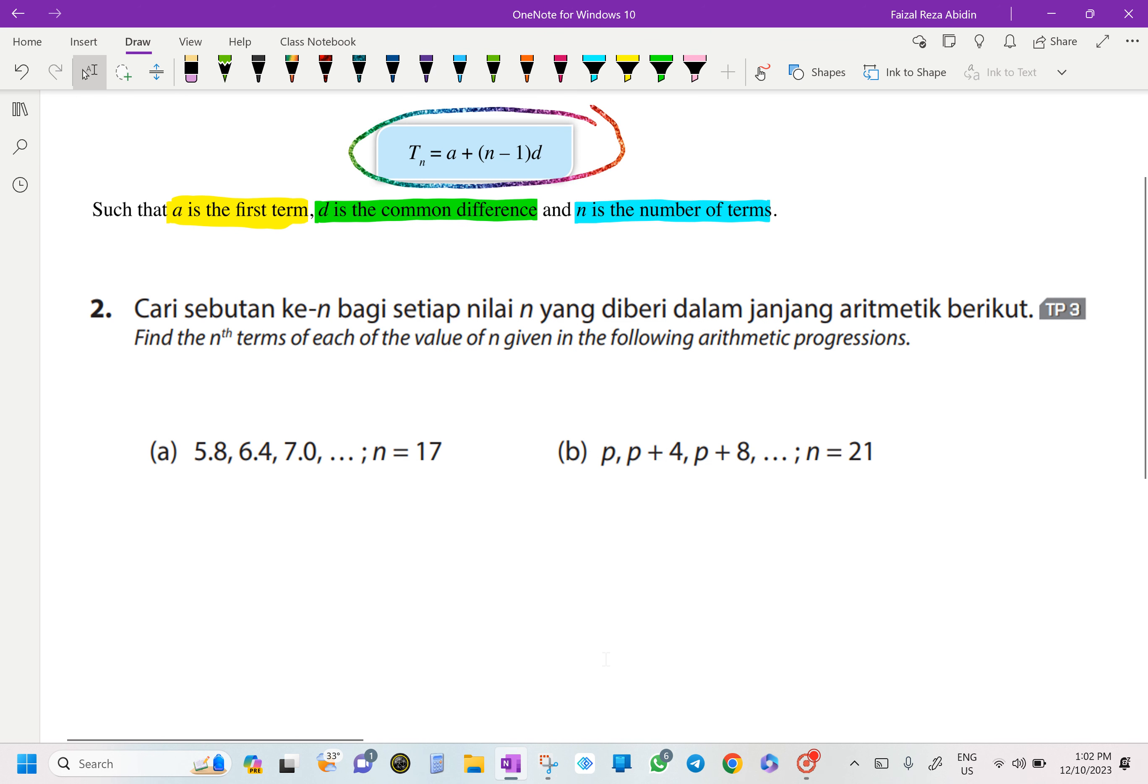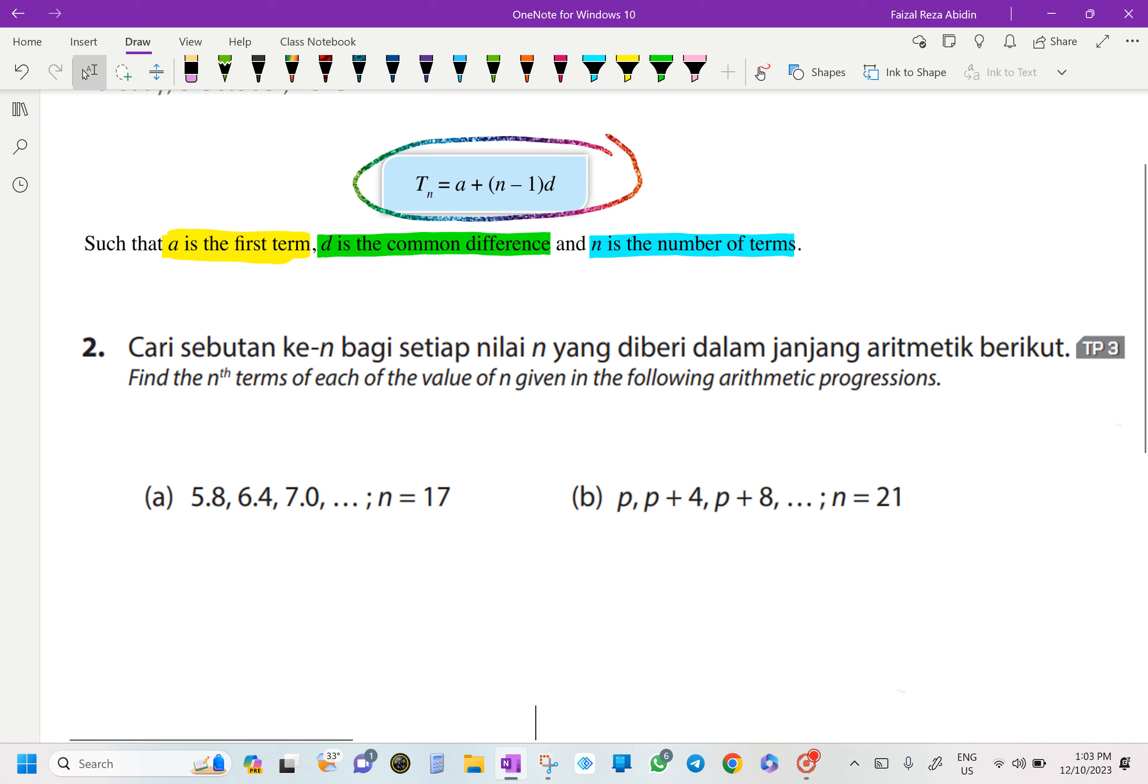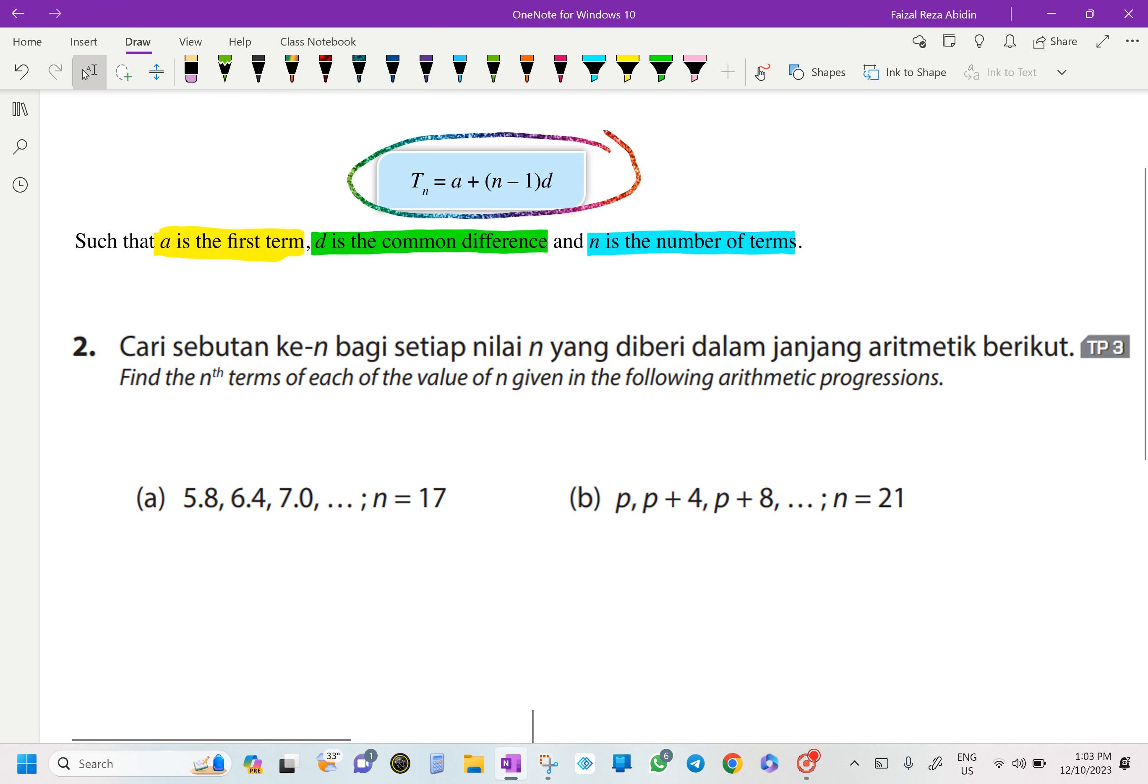Okay, so for the next one, by using the formula that we have in our textbook just now, TN equals to A plus N minus 1 times D.